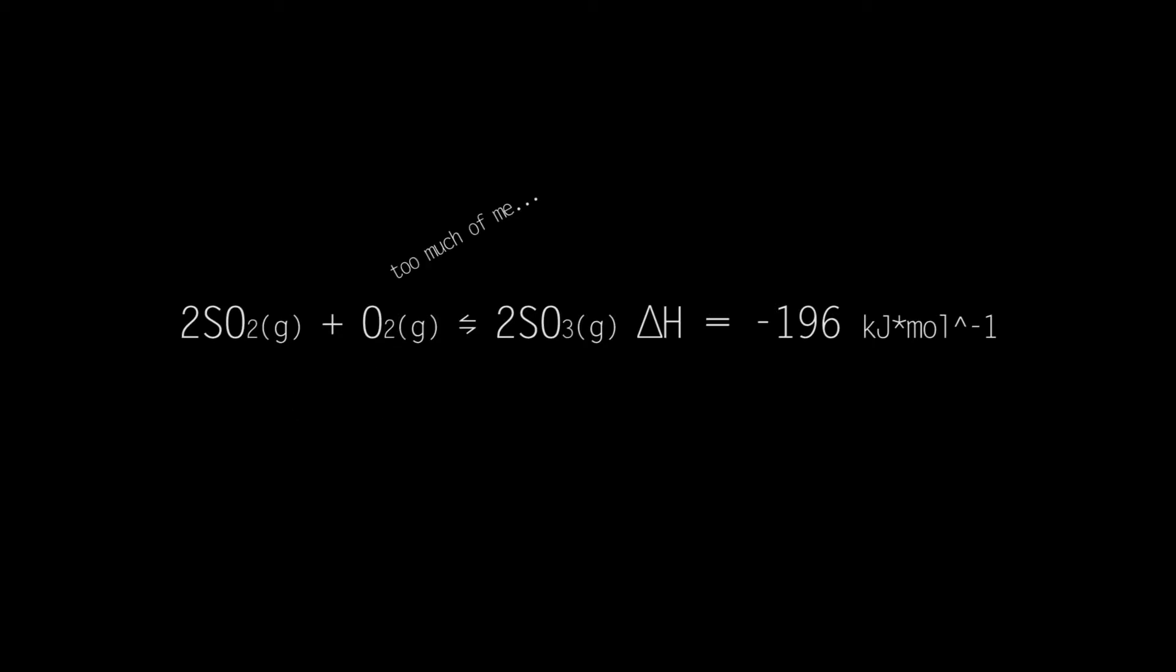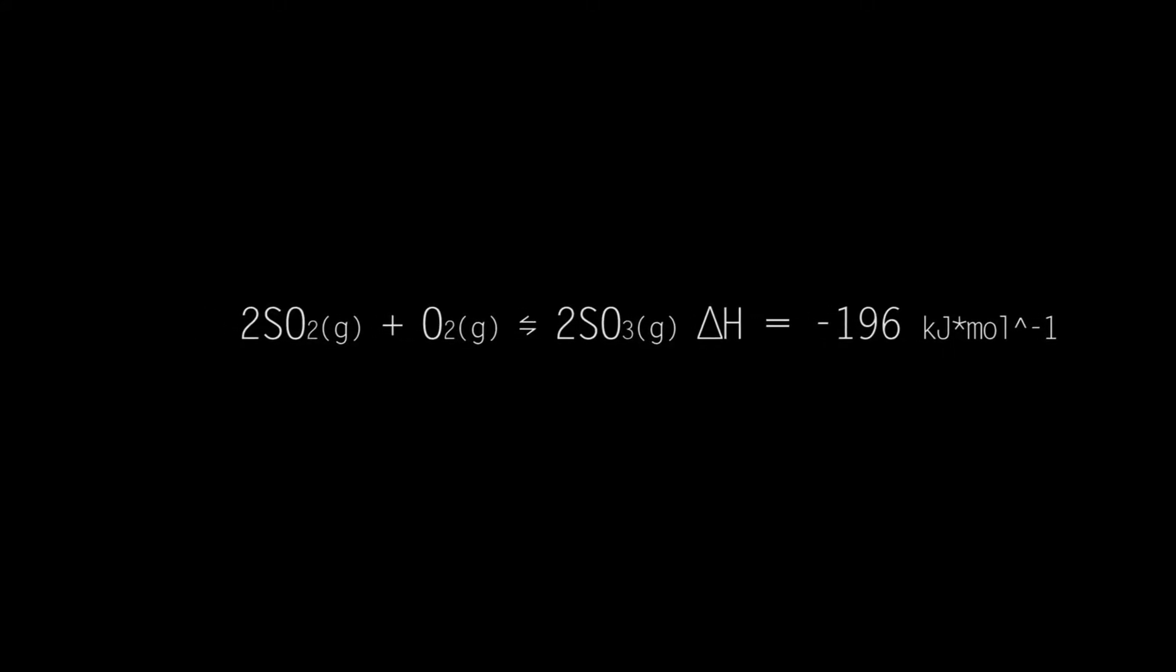However, this means there is an excess of oxygen relative to the proportion indicated by the equation. Because of Le Chatelier's principle, we know that this stress on the reaction will cause it to shift towards the right, favoring the production of sulfur trioxide.